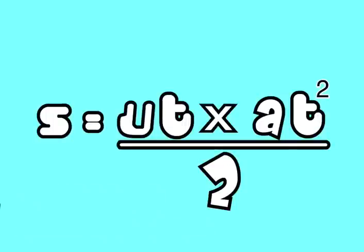Now let's take the second more complicated equation. s equals ut times at squared divided by 2.